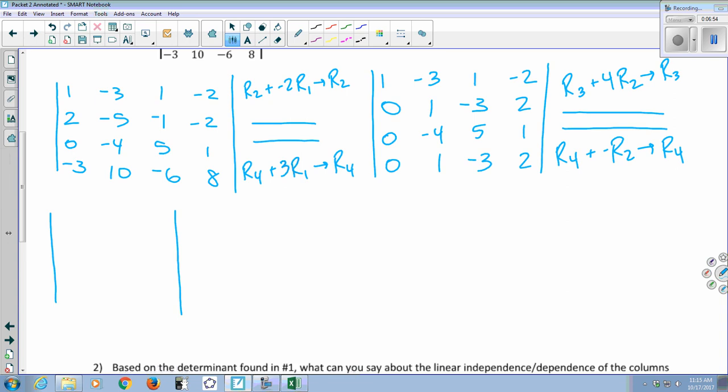Okay, so rows one and two aren't changing, so I'm going to copy those. All right. Row three, I'm going to add four row two to it. So first entry is still a zero. Four times one is four, plus negative four is zero. Four times negative three is negative twelve, plus five is negative seven. And then four times two is eight, plus one is nine. Yeah, okay.